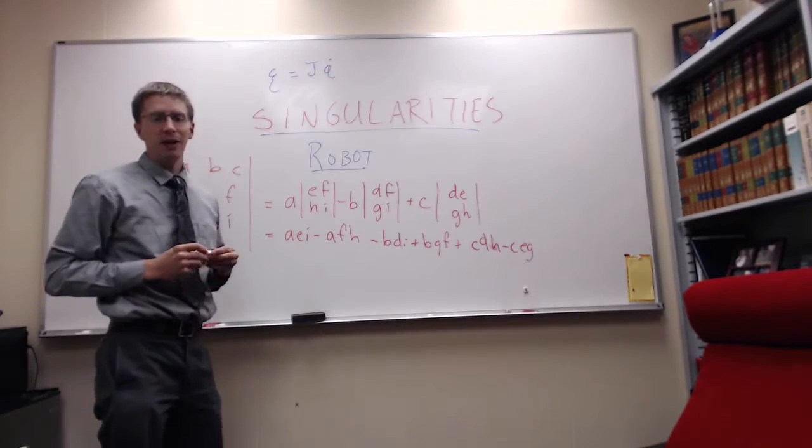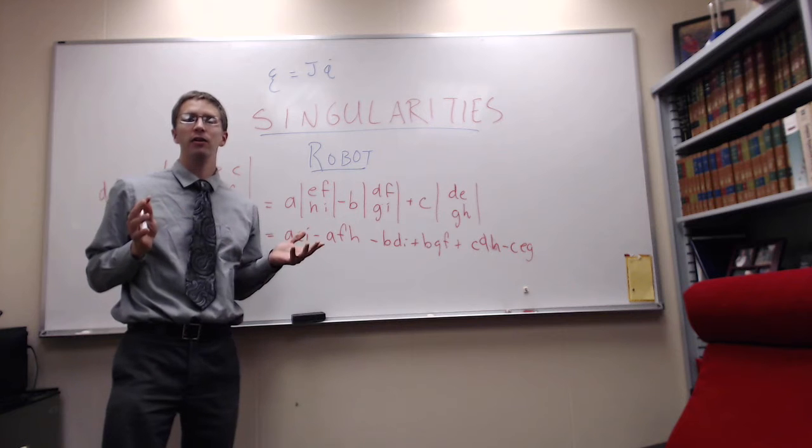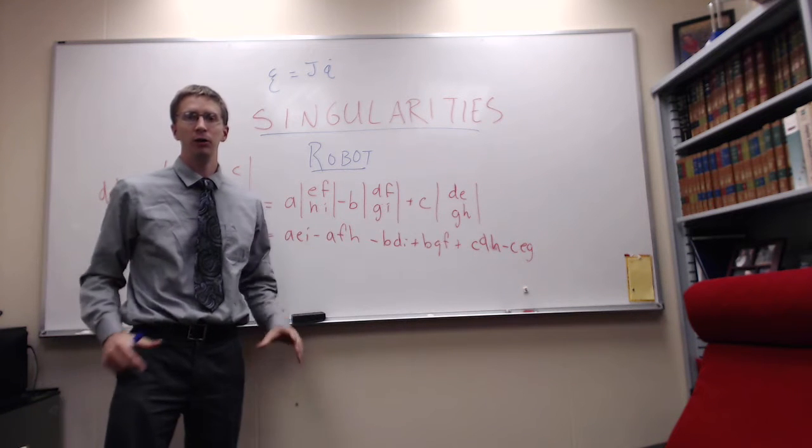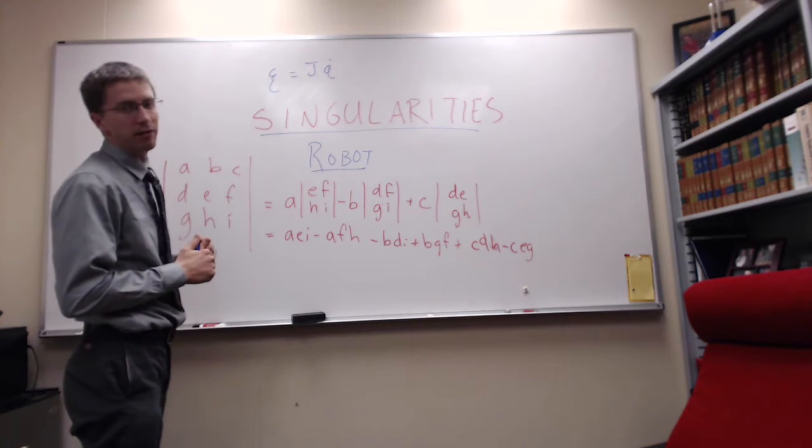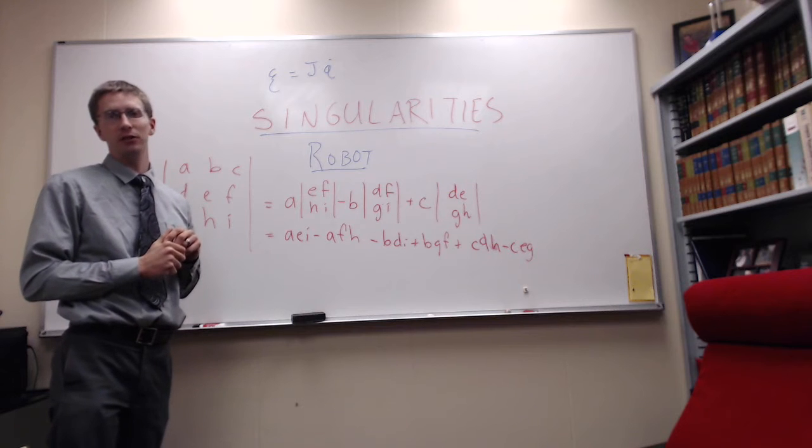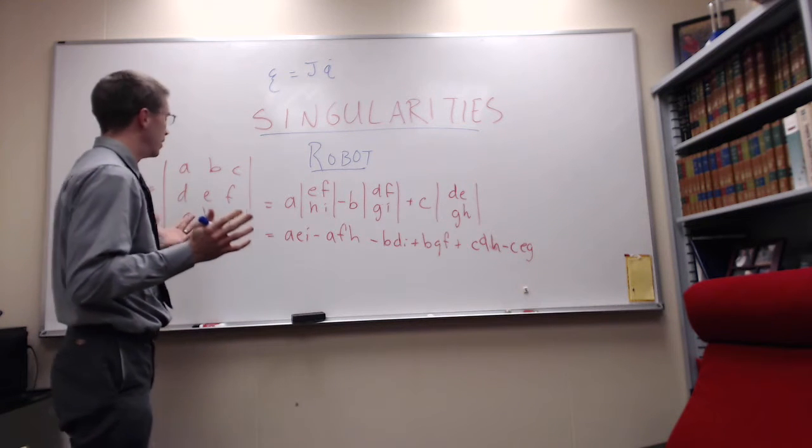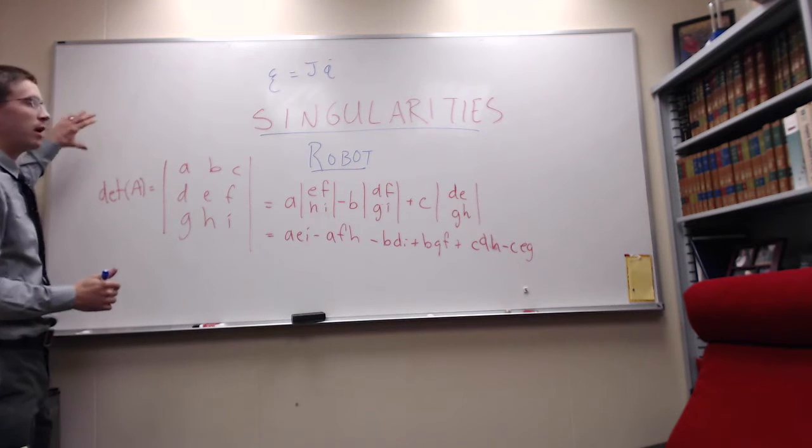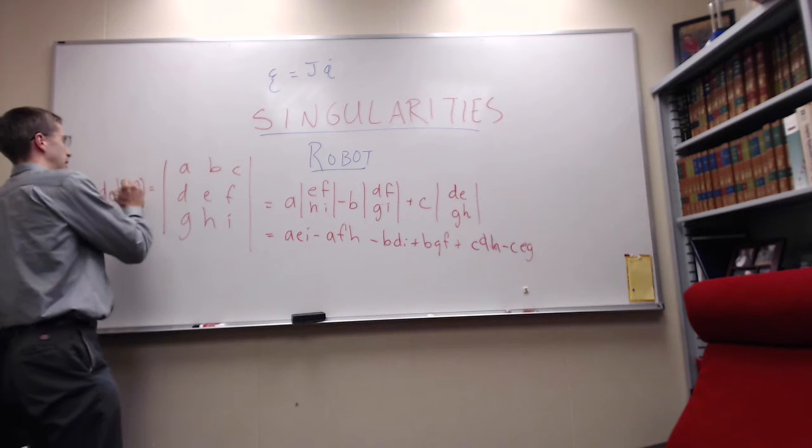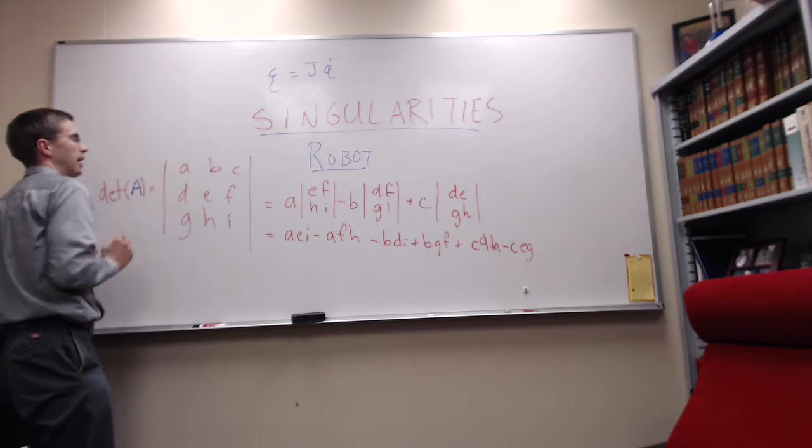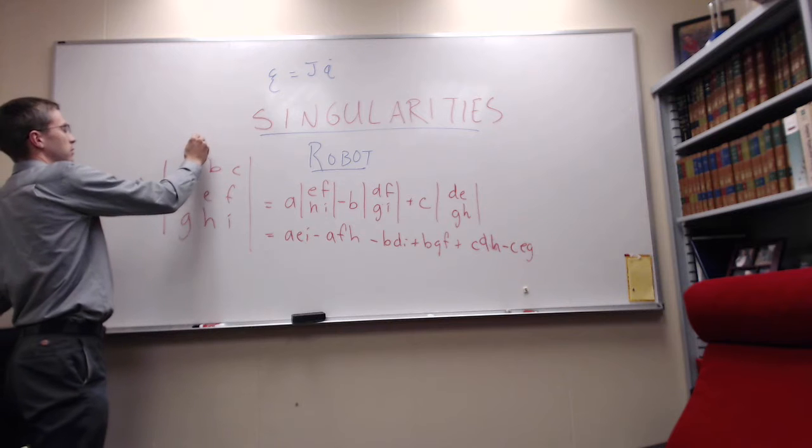In order to do that, you need to have on your final, on your crib sheet, you need to have the definition for a 3 by 3 matrix, or you have to have it memorized. To remind you of what that looks like, if we have the determinant of some matrix A, and A is a 3 by 3 matrix.